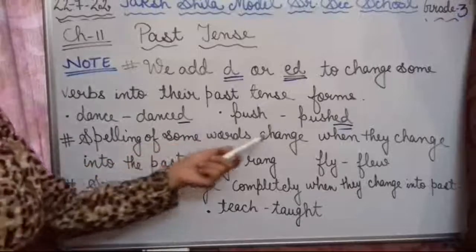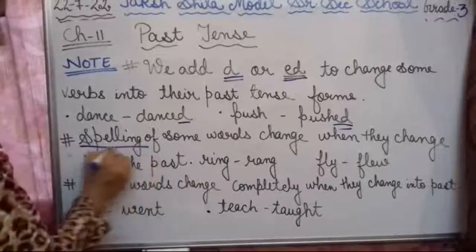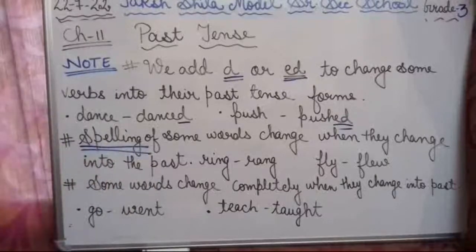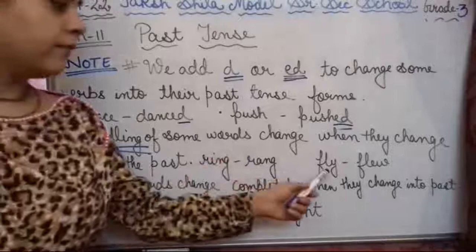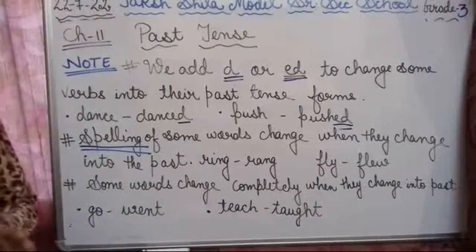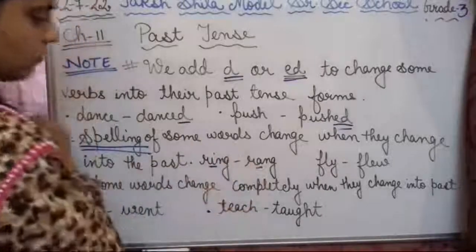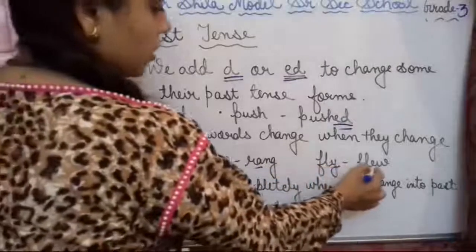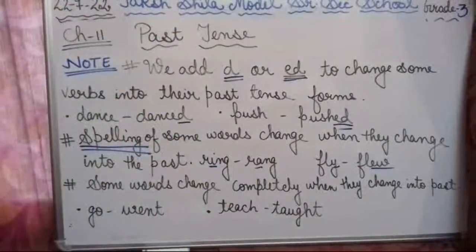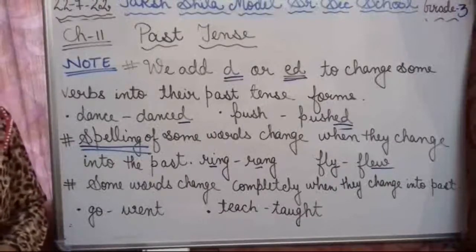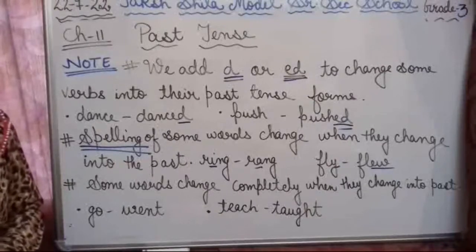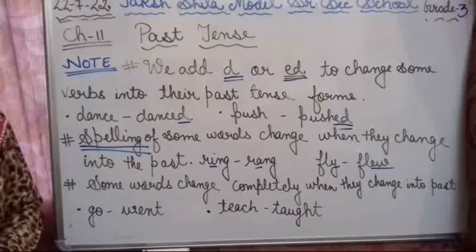The spelling of some words changes when they change into the past. For example: ring → rang (I changed to A), fly → flew (Y changed to EW), write → wrote, sing → sang, drink → drank, eat → ate.